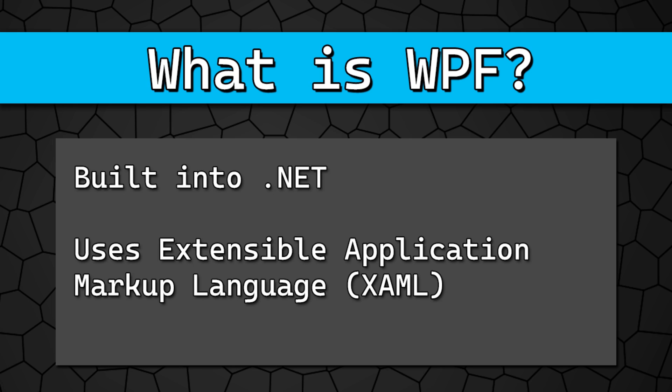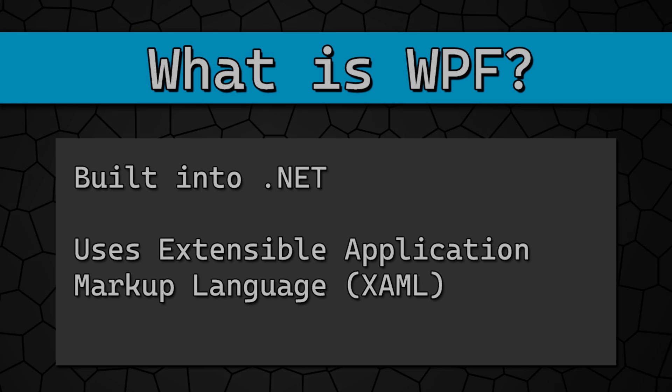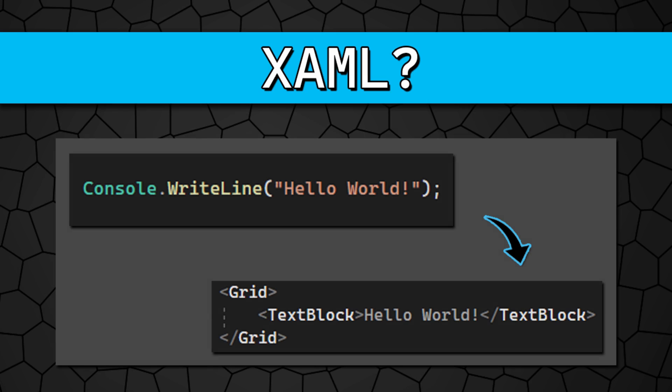WPF is built into .NET, which means it works right out of the box with Visual Studio, and it's also compatible with almost all of the .NET C# code you might have written. The real difference is that instead of calling the console to interact with the user, we're going to use Extensible Application Markup Language, or XAML, to create an interface that the user can interact with. So instead of calling the console class from our code to display Hello World, we would use a UI element in a XAML file to display it.